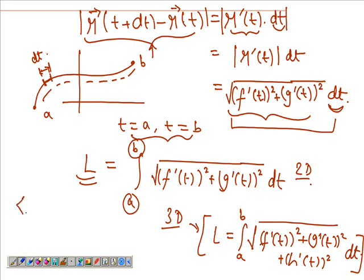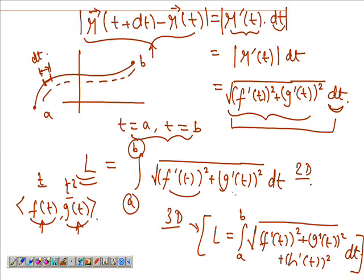That is how you find the arc length of any function. A function would be given to you, and you would know what f(t) and g(t) are — let's say t and t squared, for example. So you take the derivatives, put the values in, square them, add them, take the root, and integrate the function. Then you apply the limits a to b.